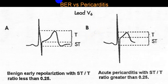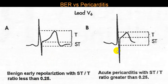Similar changes occur in benign early repolarization, so you must differentiate the two. In benign early repolarization, there is ST segment elevation with upright T wave, and the ratio of ST to T wave amplitude is less than 0.25. In pericarditis, the ST segment elevation is greater relative to the T wave, so the ST-to-T ratio is greater than 0.25, because T wave changes are more prominent compared to ST segment changes.